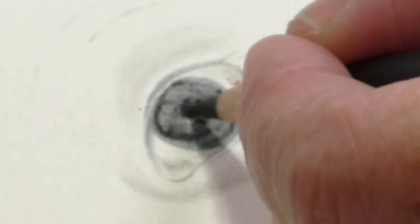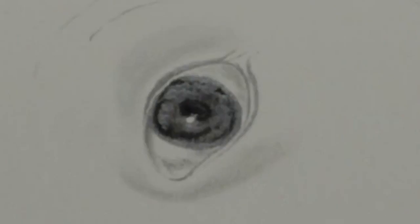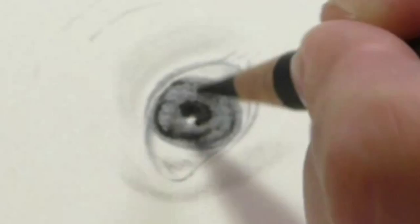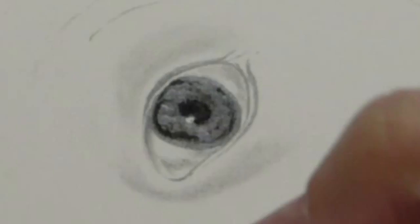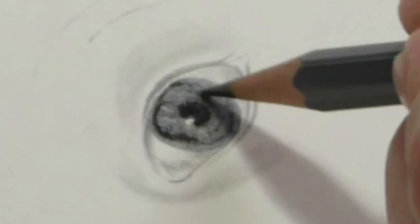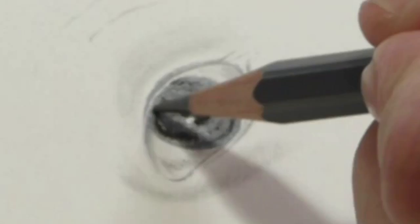However, it will go over it to a degree, but it is much better to do the charcoal first and then top it up with your graphite. I'll just work into that a little bit now. So you can see, even though she has really dark eyes, there are different tones in there. It's not just a flat dark tone.